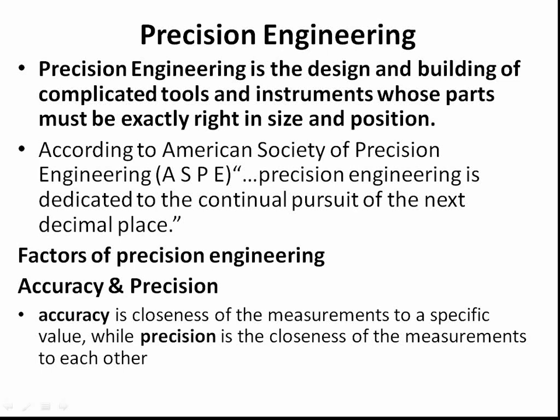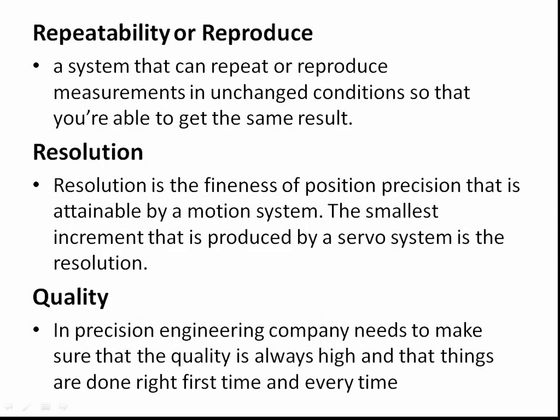Factors of Precision Engineering include Accuracy and Precision. Accuracy is the closeness of the measurements to a specific value, while precision is the closeness of the measurements to each other. Repeatability: a system that can repeat or reproduce measurements in unchanged conditions to get the same result. Resolution is the fineness of position precision attainable by a motion system.